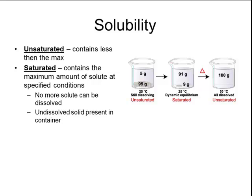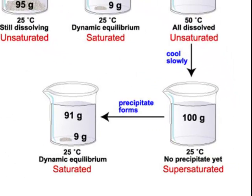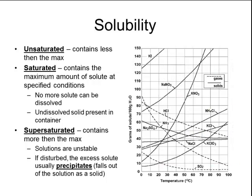Now, if you take that warm solution and allow it to cool down very, very slowly, you can actually produce a solution that is considered to be supersaturated, meaning it contains more than the maximum amount that's able to be dissolved. These solutions are usually very unstable, and if the solution is disturbed — the container is bumped or one extra little salt crystal is added — all of the excess solute will usually precipitate and fall out of solution. Once the precipitate forms, the resulting solution is now considered saturated again.